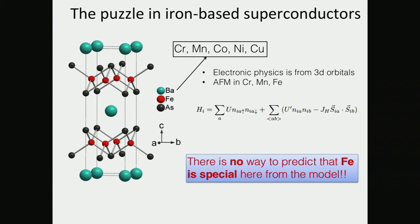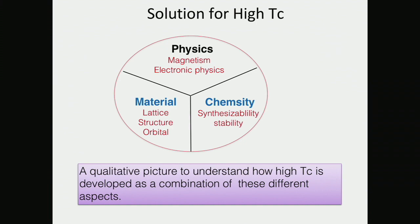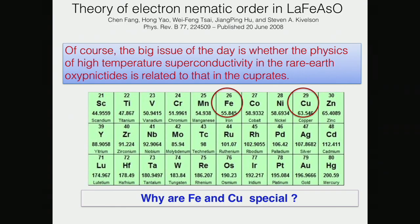In fact, using standard many-body methods, chromium would be predicted as the highest-Tc superconductor — but certainly, if you dope that system, you kill the magnetism and nothing comes out. That changed my philosophy. For the high-Tc problem, we really need to understand not just the physics part but also the materials part and the chemistry part. I want to get a qualitative picture that combines all these aspects.